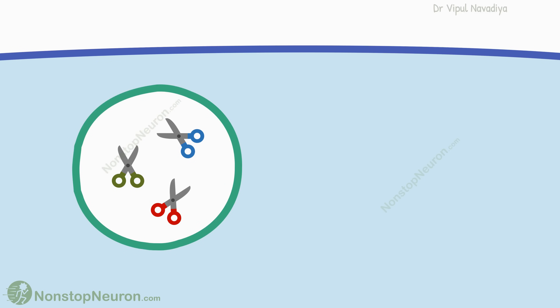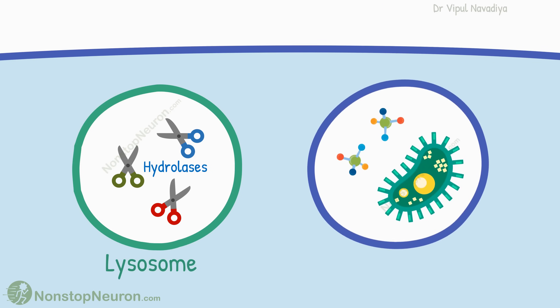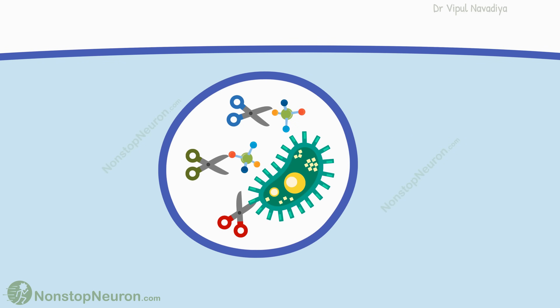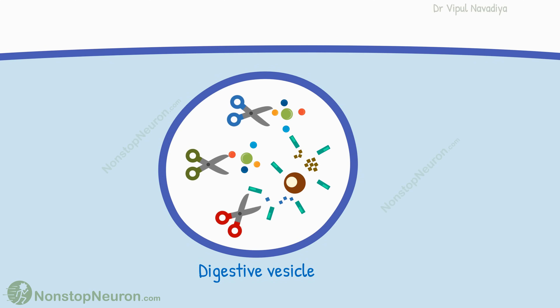The cell has organelles called lysosomes, containing various hydrolase enzymes. The vesicle formed by pinocytosis or phagocytosis merges with this lysosome. This empties the enzymes of the lysosome into the vesicle. Now it is called a digestive vesicle, and as per the name, it starts digesting the proteins, carbohydrates, lipids, and other things in the vesicle.